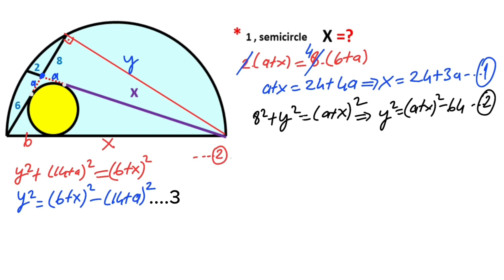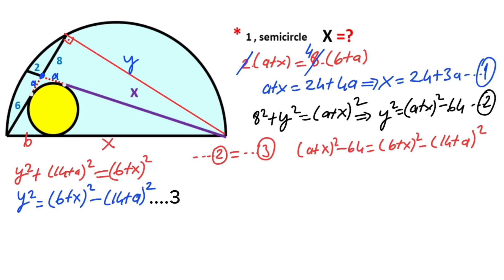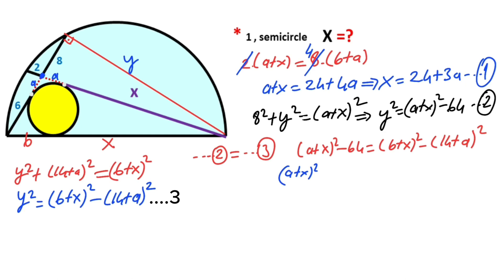Notice that the second and third equations are equal. So (a plus x) squared minus 64 equals (6 plus x) squared minus (14 plus a) squared. Let's organize: moving terms gives us (a plus x) squared plus (14 plus a) squared equals (6 plus x) squared plus 64.